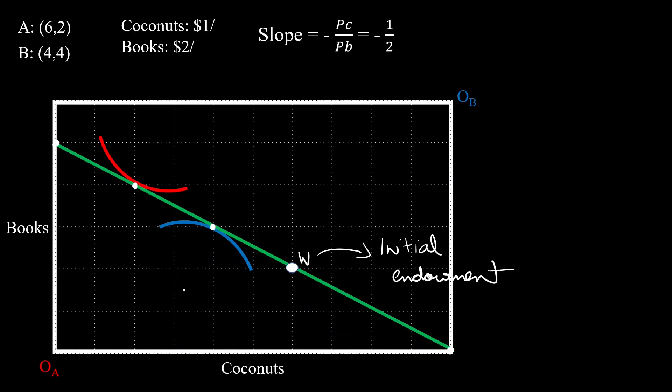Let's check this case in terms of coconut. A initially has six coconuts and to be on his optimal point, A only wants two coconuts. So he'll be willing to sell four of his coconuts to B. Now let's check this from B's perspective. B initially has four coconuts and to be on her optimal point, B wants six coconuts. That means B is willing to buy two more coconuts. So A is willing to sell four coconuts and B is willing to buy two of those four coconuts. So there are two coconuts that nobody wants. That means that the total amount of goods these two agents want is not equal to the total amount of available goods inside the box. Our market is not in equilibrium.